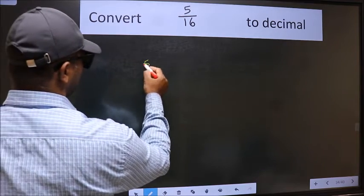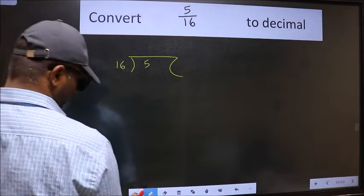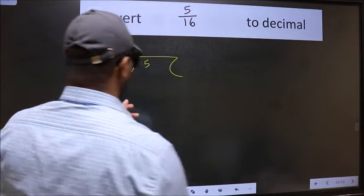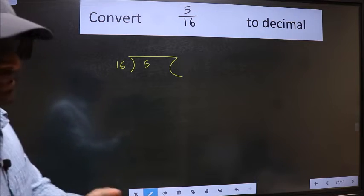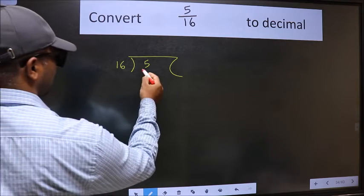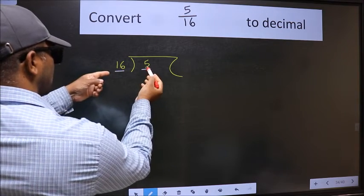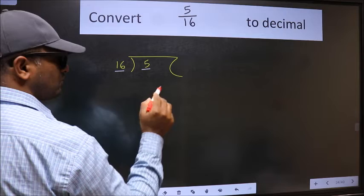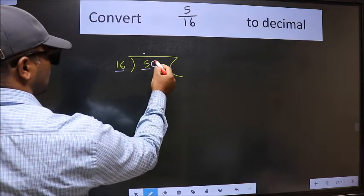5 here and 16 here. This is your step 1. Next, here we have 5 and here 16. 5 is smaller than 16. So what we should do is we should put dot and take 0.